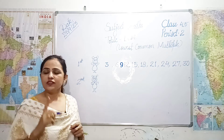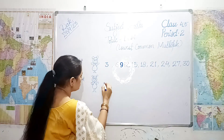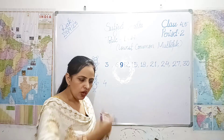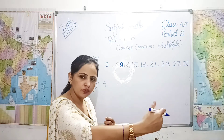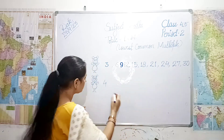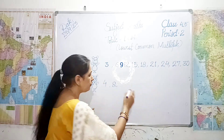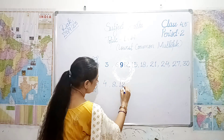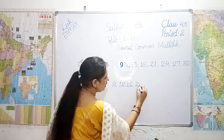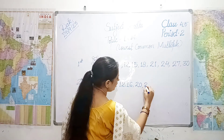Now the second rabbit — first time he jumps four jumps: one, two, three, four. Second time: five, six, seven, eight. Third time: nine, ten, eleven, twelve. Fourth time sixteen, then twenty, then twenty-four.